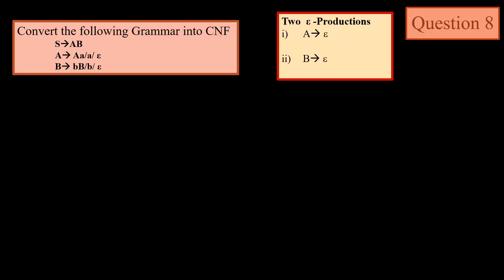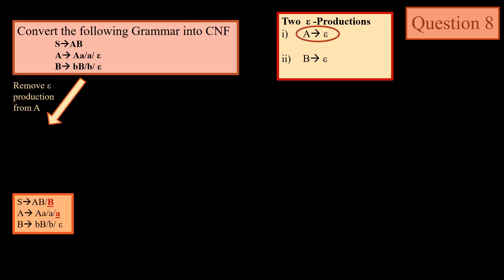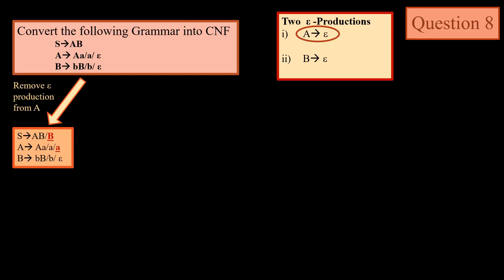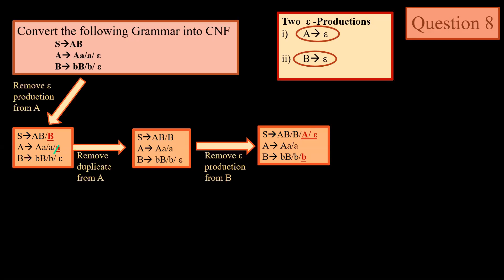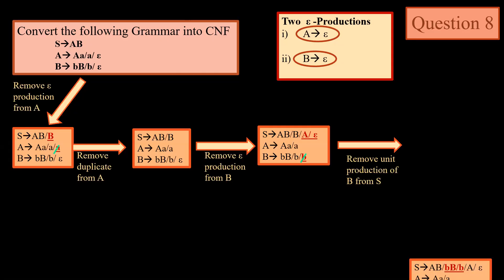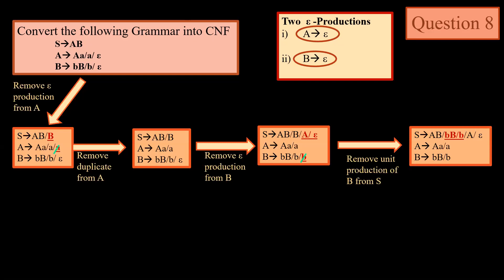In the next question we have two epsilon productions: one is A → ε and another is B → ε. First we remove A → ε. When we remove that, we get S → B and A → a. Duplicate is removed and epsilon is removed. We get epsilon in S when we remove the epsilon from B. Since the start symbol can have an epsilon, we need not remove it. We just remove duplicate P from the production of capital B. Now we remove the unit production of B from S and the output is: S → AB | bB | b.